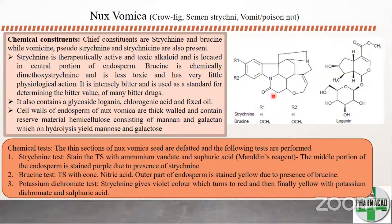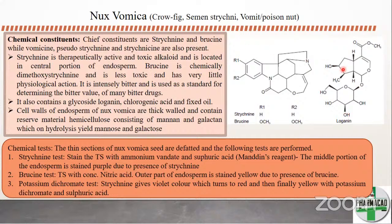Brucine is intensely bitter and is used as a standard for determining the bitter value of many bitter drugs. Nux vomica also contains a glycoside — loganin — which is an O-type glycoside. Cell walls of the endosperm are thick-walled and contain reserve material — hemicellulose consisting of mannan and galactans — which on hydrolysis yield mannose and galactose.